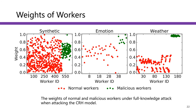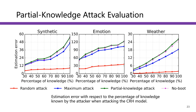Recall that the CRH model uses a weight parameter to capture worker reliability. A worker should be assigned a higher weight if his values are closer to the estimated true values. From these figures, we can see that the malicious workers generated by our attack model have higher weights compared with normal workers. This figure shows the partial knowledge attack evaluation results. We can see that as the attacker has access to more data collected by normal workers, the estimation error increases. The attacker can slightly improve attack performance when using the bootstrapping technique to estimate the before-attack values.